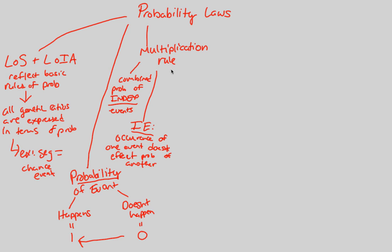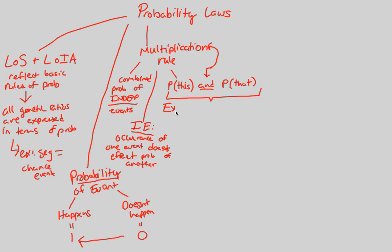A simple way to write this in genetics is: probability of 'this' and probability of 'that' — two independent events. The word 'and' is key — it tells you to multiply. The multiplication rule is also known as the 'and rule.' An example: consider two heterozygous parents mating — capital A, lowercase a crossed with capital A, lowercase a.